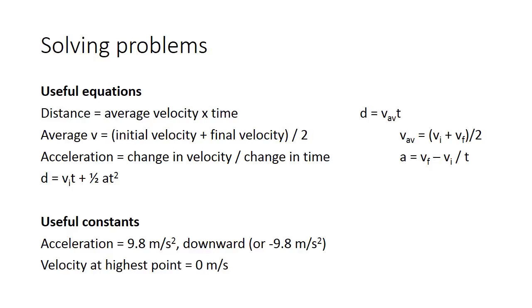Since the acceleration is constant, as we saw in our graph, the average velocity is equal to the initial plus the final divided by 2. You're just averaging the two numbers, since they change at a constant rate.